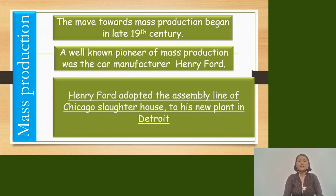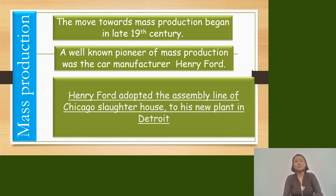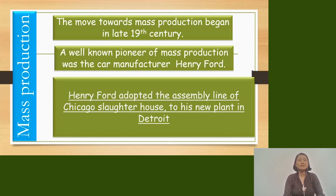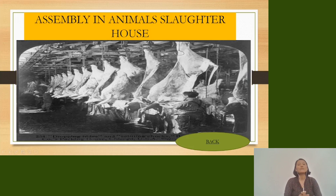Henry Ford adopted the assembly line of the Chicago slaughterhouse to his new plant in Detroit. So Henry Ford constructed a new plant — a new industry — for car production in Detroit. In this industry, he adopted the assembly line method from the Chicago slaughterhouse, and that method is called the assembly line.